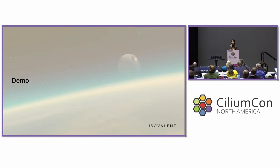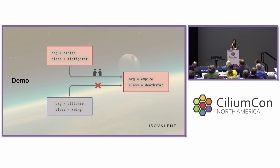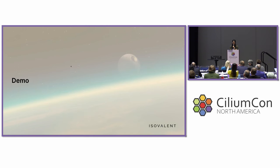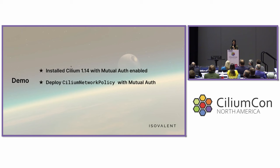Now it's time for a demo — the first somewhat live one of the day. In a galaxy far, far away, the Empire has decided to enable mutual authentication in their cluster because they want to step up and be better about security. They want to enable handshakes between the Death Star and their TIE Fighters, while not allowing connections from the Alliance's X-Wings. They have a couple of steps: first, install Cilium 1.14 with mutual auth enabled, then deploy a Cilium network policy with mutual auth — those two lines of YAML.